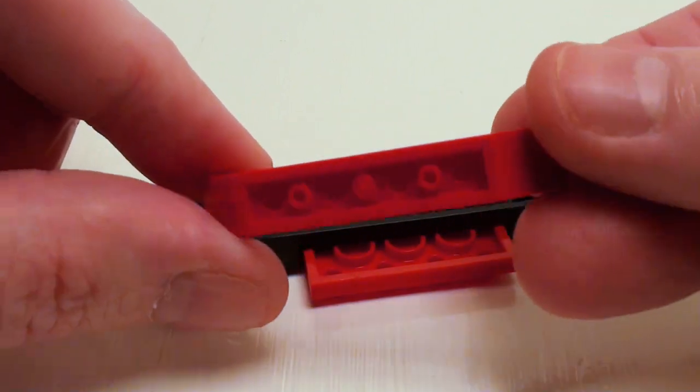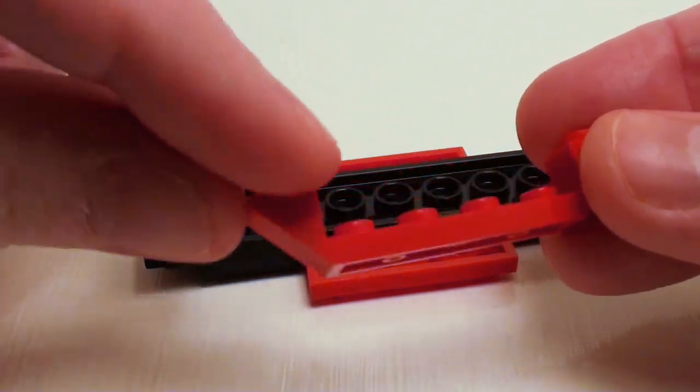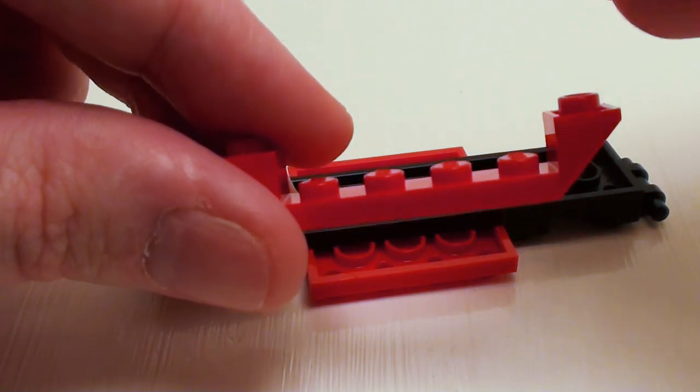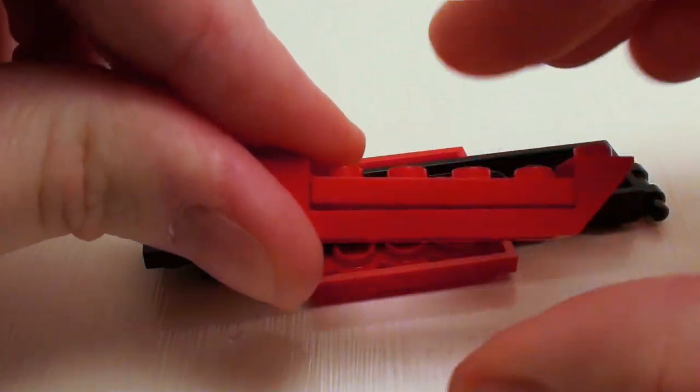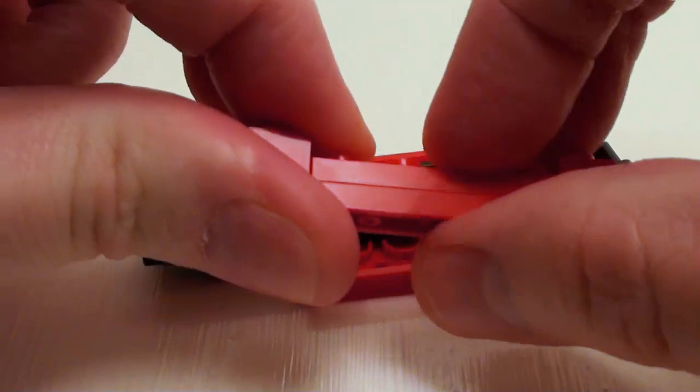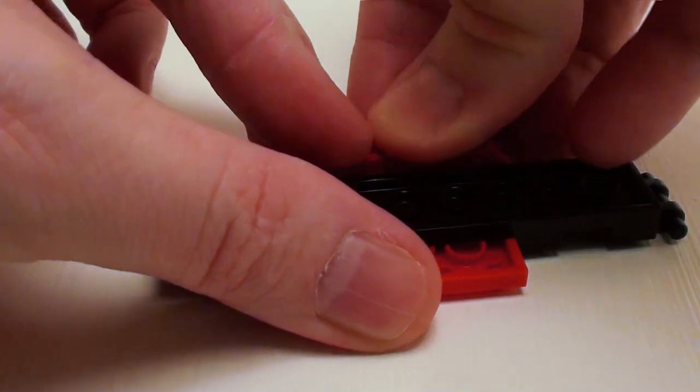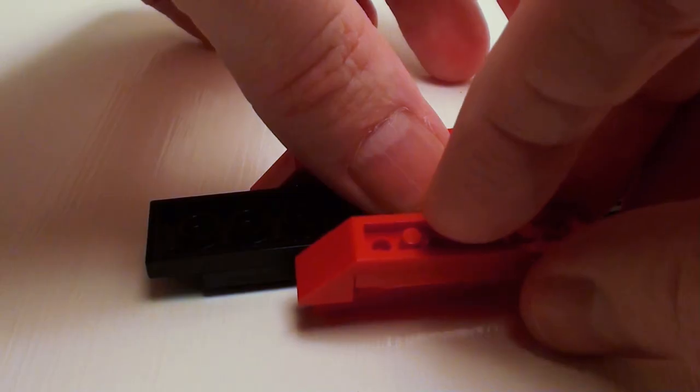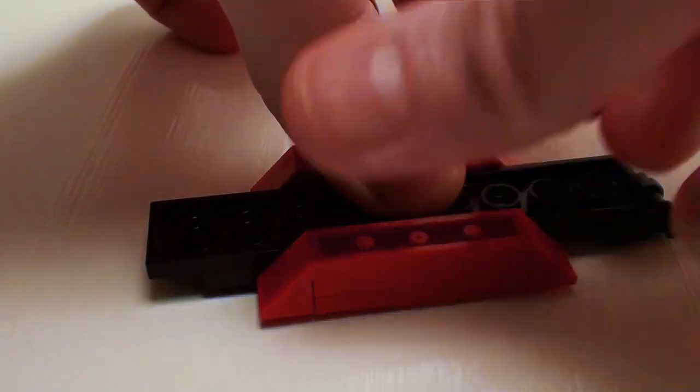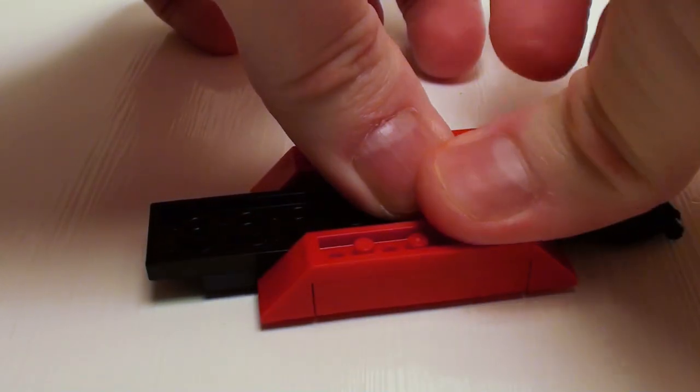I'm going to take a modified 1 by 4 plate with two inverted 45-degree slopes, and I'm going to set down a 1 by 4 plate inside. I want to make two of these. I'm going to set these on the bottom portion of our 4 by 4 plate.